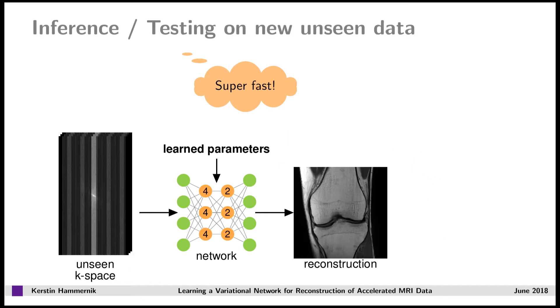Once the parameters are learned, new unseen data can be reconstructed efficiently by simply forward propagating the new data through the network.